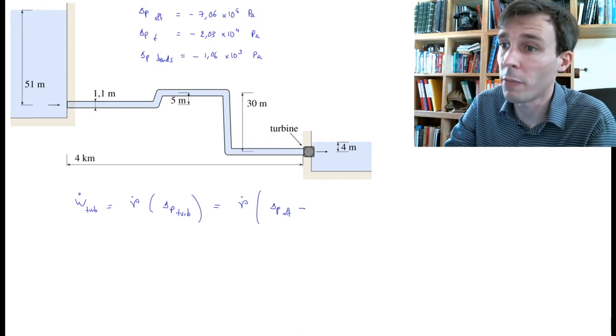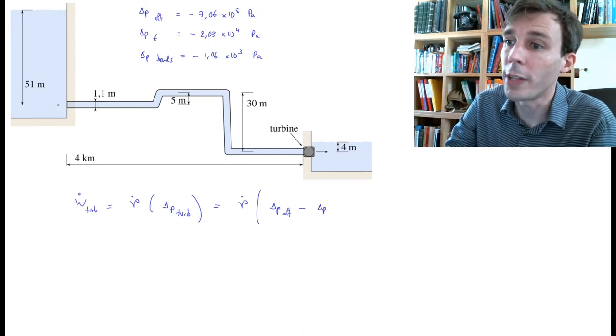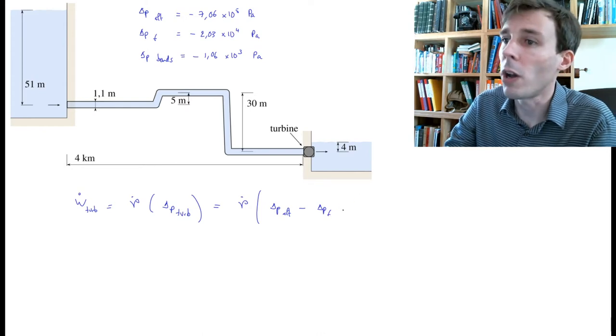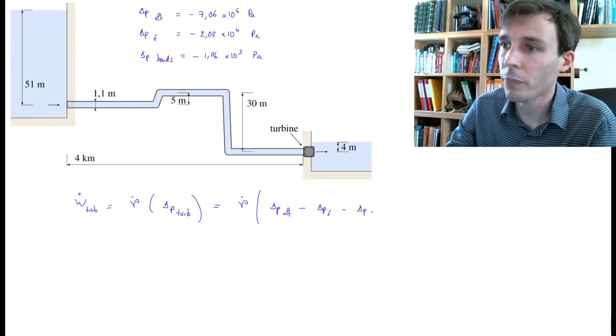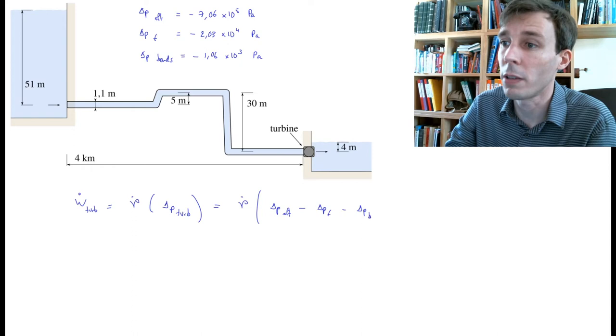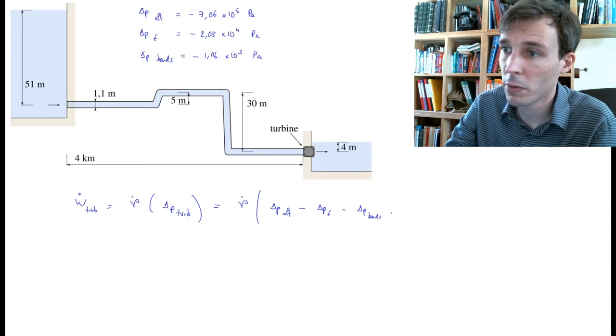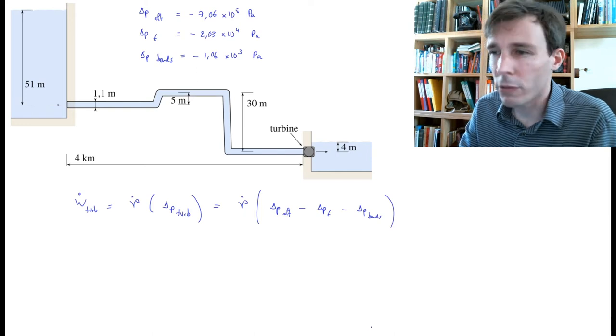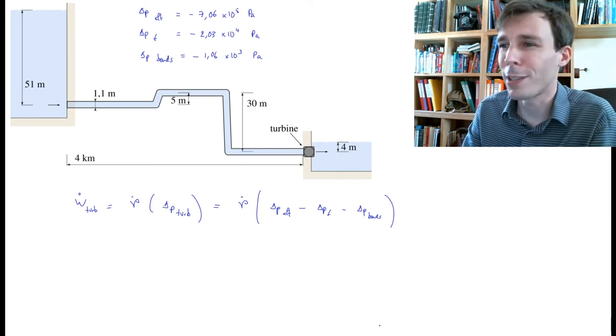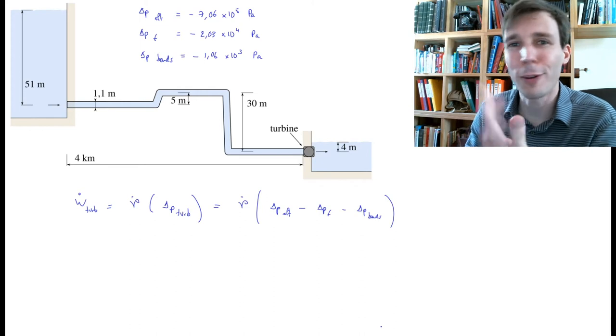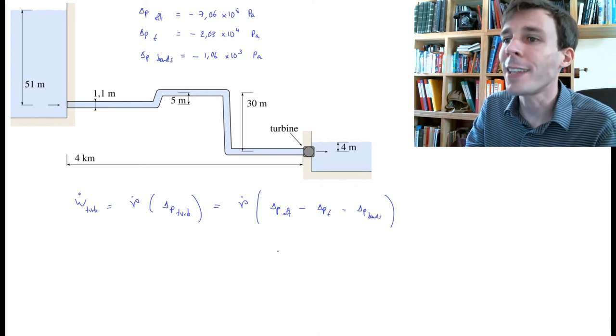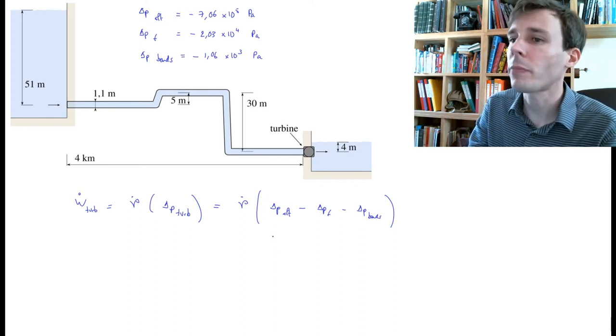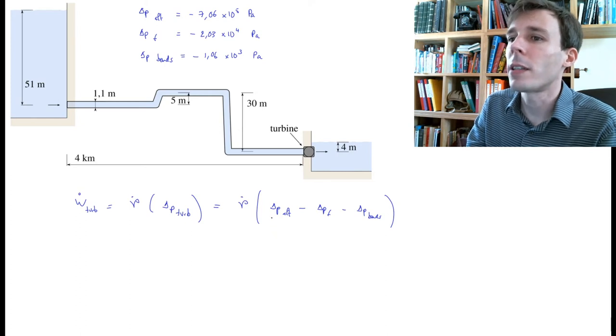We have to remove it from there, so we remove delta P due to friction and we also remove the delta P due to the bend losses. You have to be very careful with this because every fluid dynamicist has at some point tripped over their own feet adding or subtracting those terms.